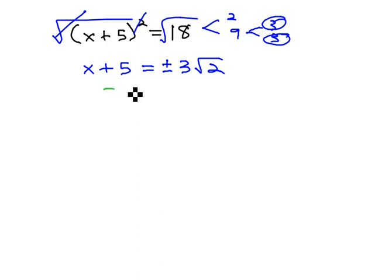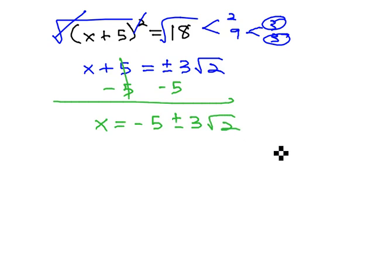And then we can isolate the x by subtracting 5 from both sides. This gives us x equals negative 5 plus or minus 3 times the square root of 2. These are the solutions to the equation x plus 5 squared equals 18.